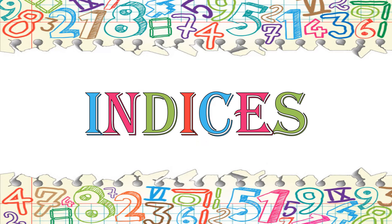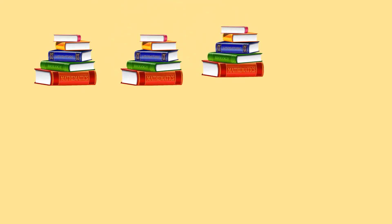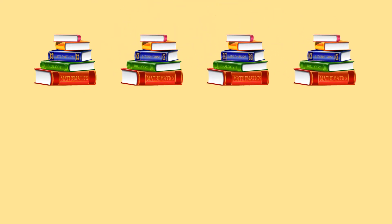Just imagine I'm giving you a set of five books, another set, another set, and one more set. Now I'm asking you to tell me how many books do you have in all? You simply add 5 plus 5 plus 5 plus 5, which gives you 20. But there is another short way of doing this, and that is 5 into 4 is equal to 20.